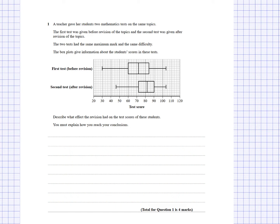To get one mark, we can state that the median is higher after revision and state what the values are. To get another mark, we can state the interquartile range for each test and say it's smaller after revision. For that same mark, instead of interquartile range, we could do the range - state what they are and say it's smaller after revision.